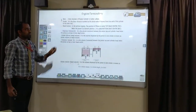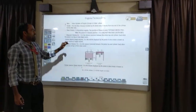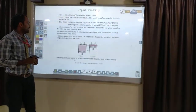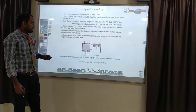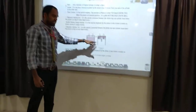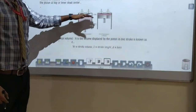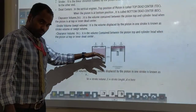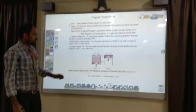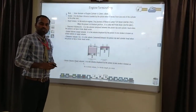Clearance volume is the volume contained between the piston and the cylinder head when the piston is at the top dead centre. The stroke volume is denoted as Vs, and clearance volume is denoted as Vc. This is the bore diagram: this is the TDC — top dead centre — and this is the BDC — bottom dead centre. When the piston moves upward it is called top dead centre; when the piston is at the bottom of the cylinder it is called bottom dead centre. Stroke volume Vs equals (π/4) × L × D².